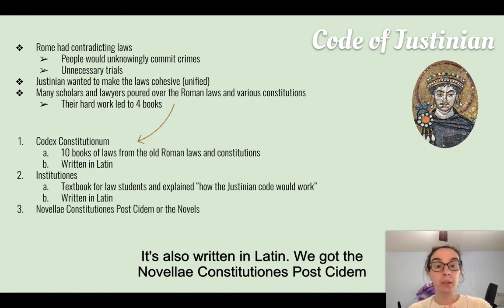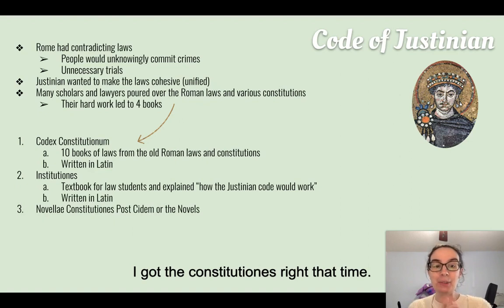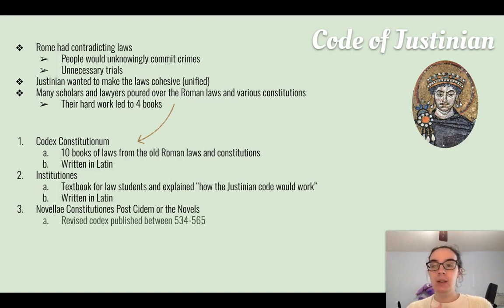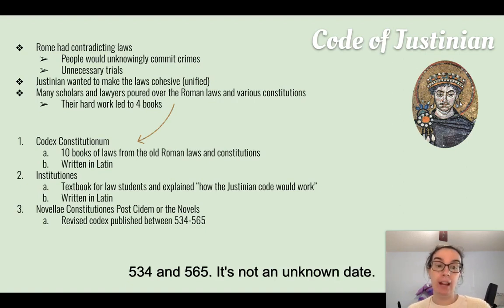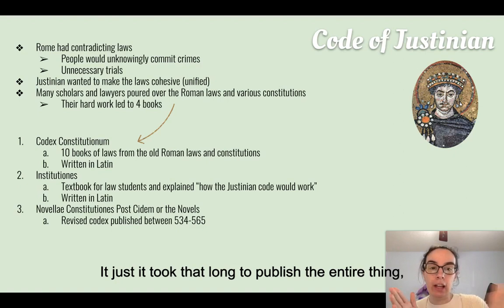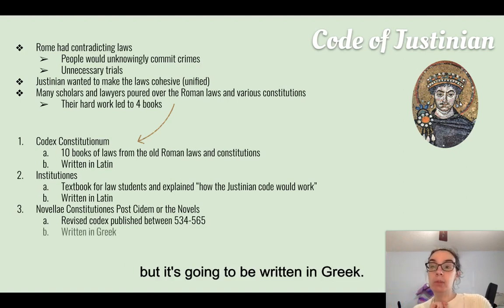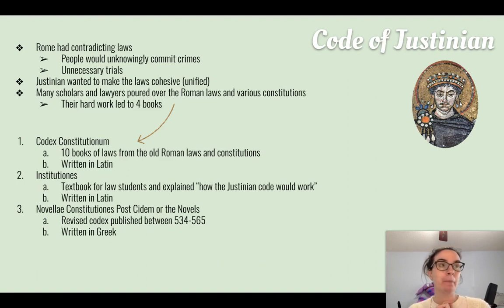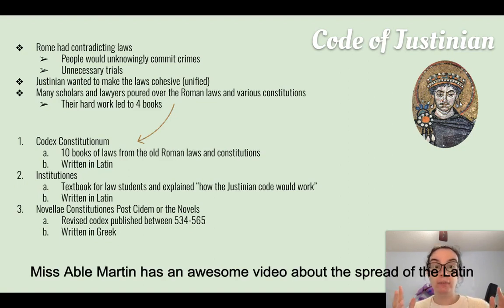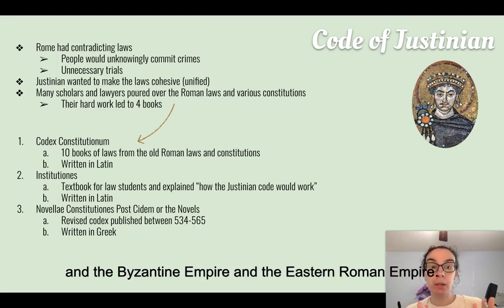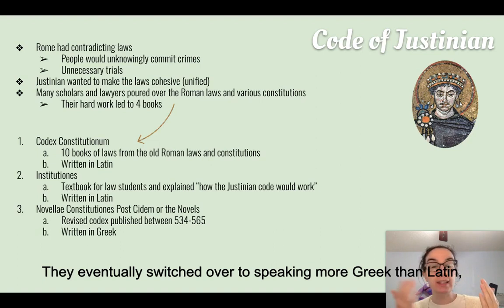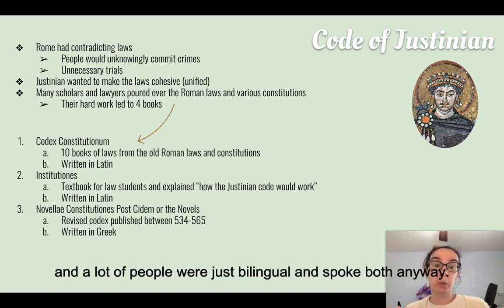The third book is the Novellae Constitutiones, or the Novels. This was a revised codex published between 534 and 565 — it took that long to publish the entire thing. It is written in Greek, because the people in the Byzantine Empire eventually switched over to speaking more Greek than Latin, though many were bilingual and spoke both anyway.